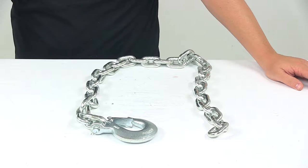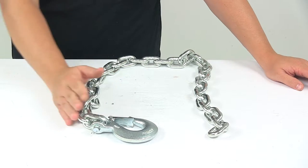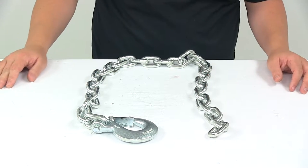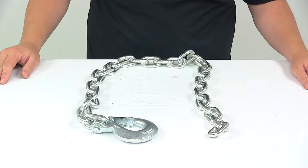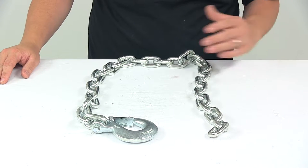Today we're taking a look at a class four trailer safety chain with clevis hook. Safety chains are a critical component when it comes to the connection between the trailer and the vehicle that's towing the trailer.